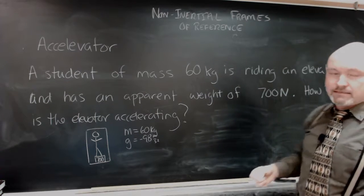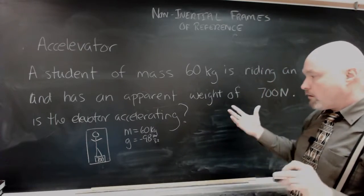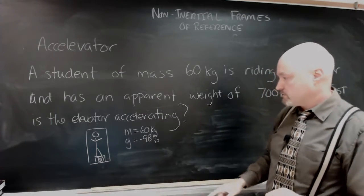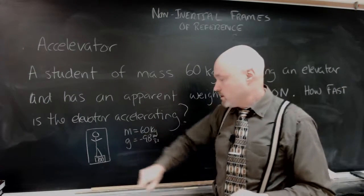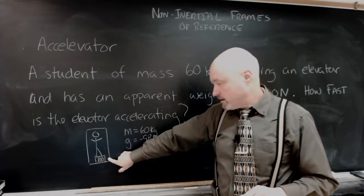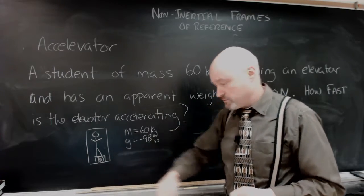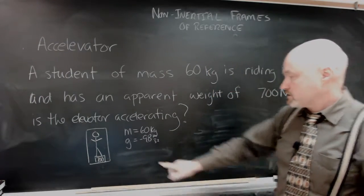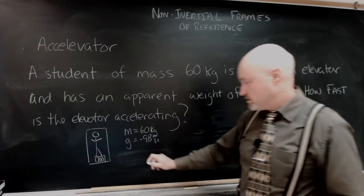How fast is this elevator accelerating? Obviously it's going up. This person weighs more than they would expect. So, they're sitting on a scale. Scale says 700. It's a nice digital readout here. And what the scale is actually telling them is what the normal force is.